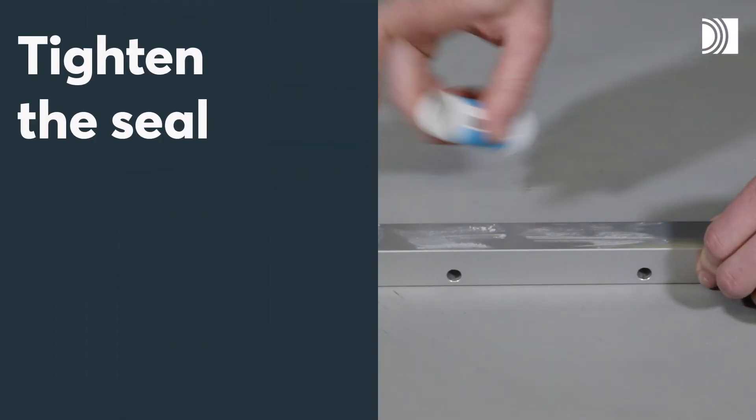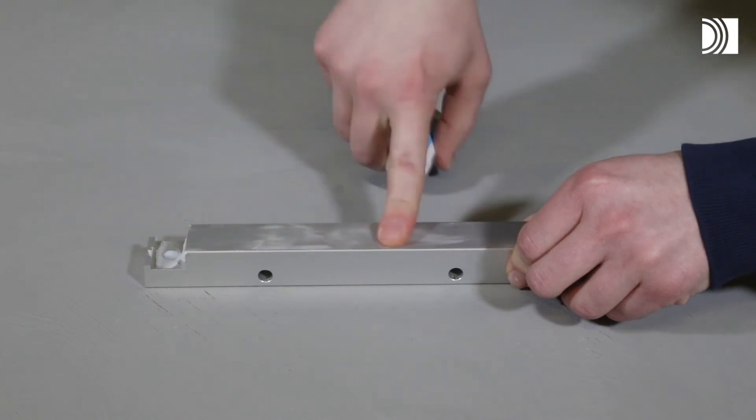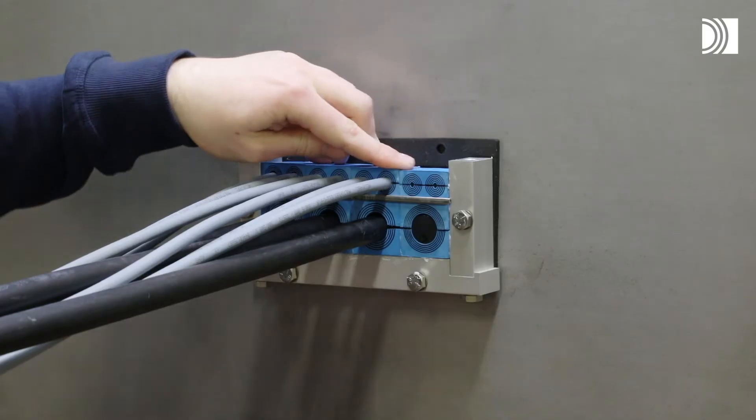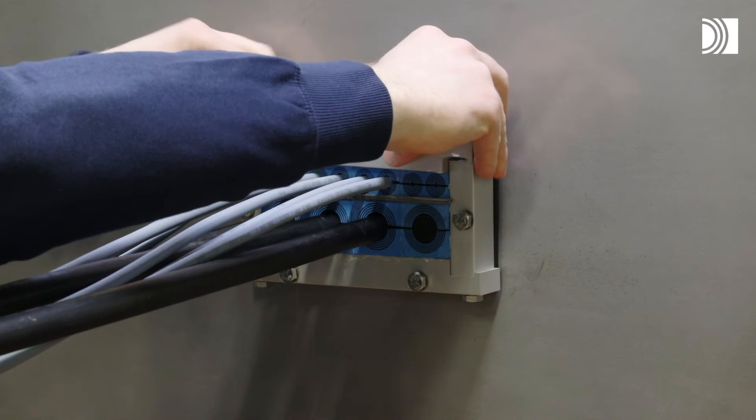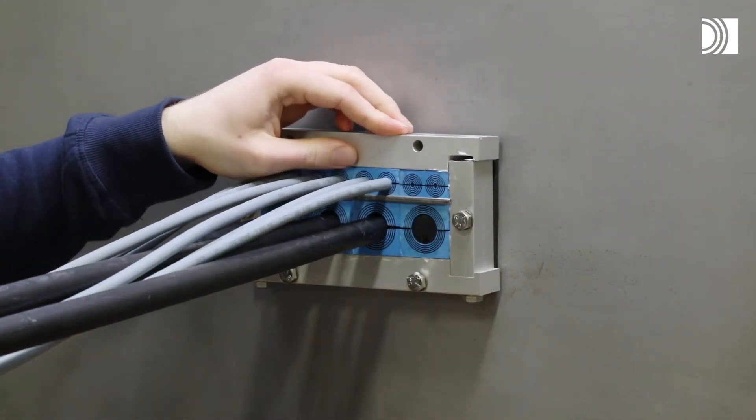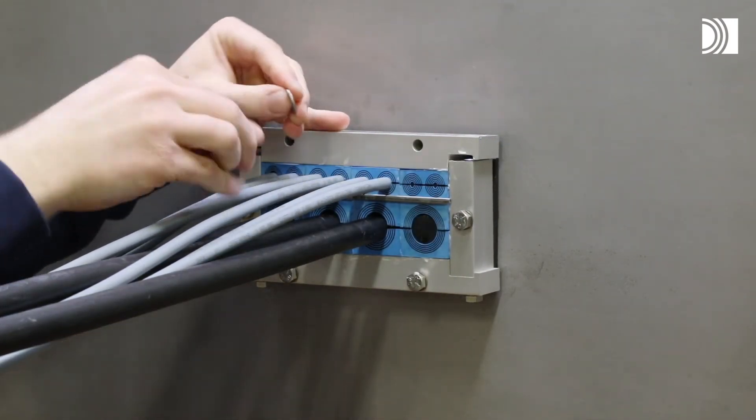Lubricate the contact and sealing surface of the remaining upper long part. Attach the upper long part loosely to the short parts of the frame using screws and NSK washers.